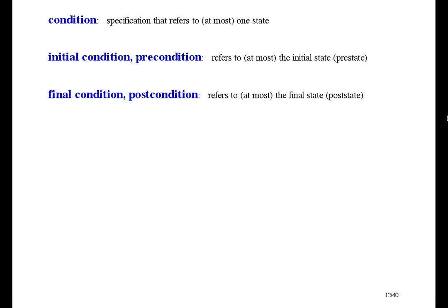A condition is a specification, or binary expression, that talks about just one state. If it's the initial state, or pre-state, it's called an initial condition, or precondition. If it's the final state, or post-state, it's called a final condition, or post-condition.